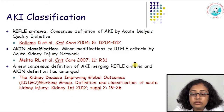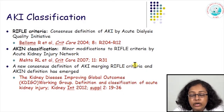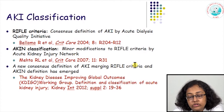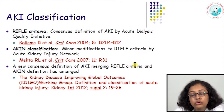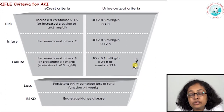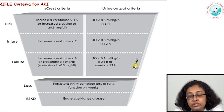Based on this, many classification systems have come over the last decade. The RIFLE criteria came in 2004, followed by the Acute Kidney Injury Network (AKIN) classification in 2007, and finally the KDIGO classification in 2012. The RIFLE criteria defined acute kidney injury in terms of Risk, Injury, Failure, Loss, and finally End-stage kidney disease.